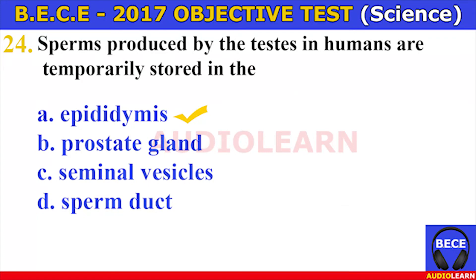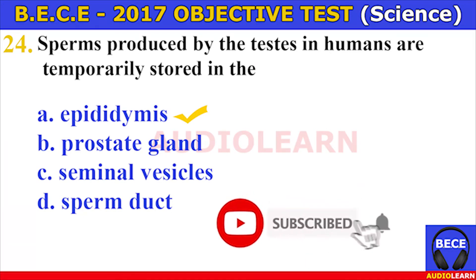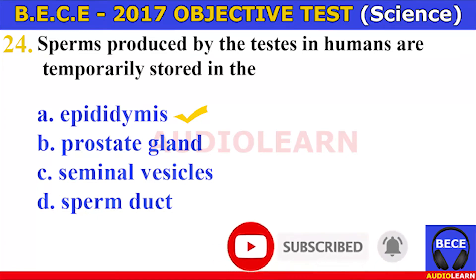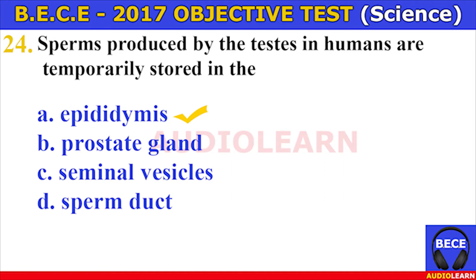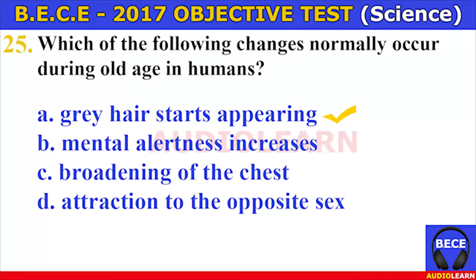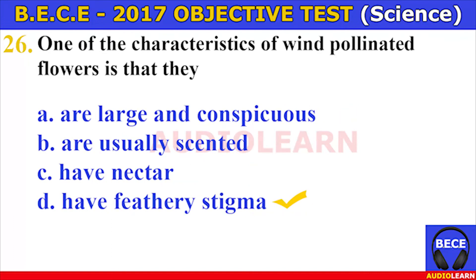Number twenty-four. Sperm produced by the testes in humans are temporarily stored in the A. Epididymis, B. Prostate gland, C. Seminal vesicles, D. Sperm duct. The answer is A. Epididymis. Sperm produced by the testes in humans are temporarily stored in the epididymis.